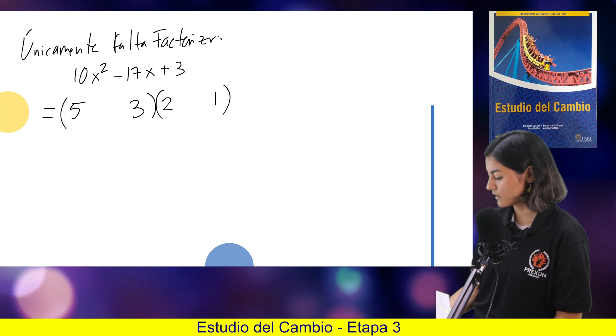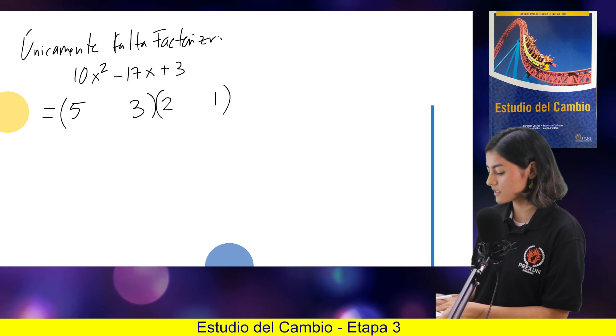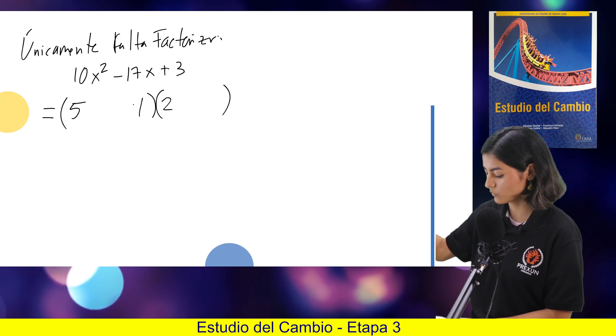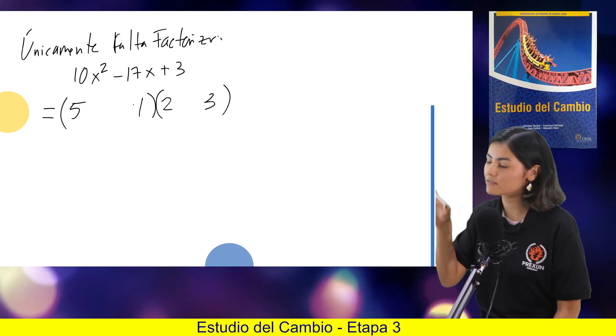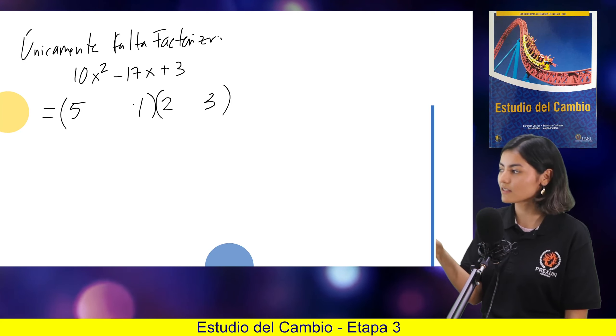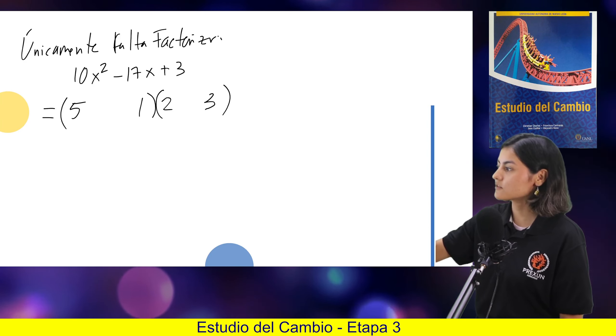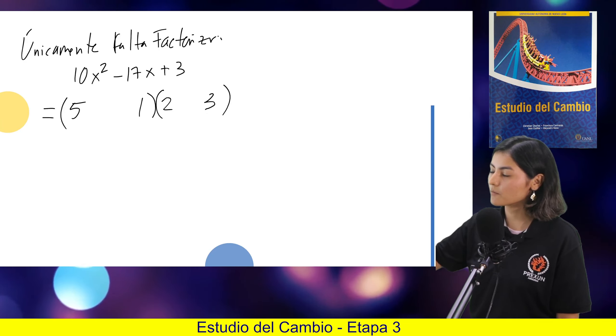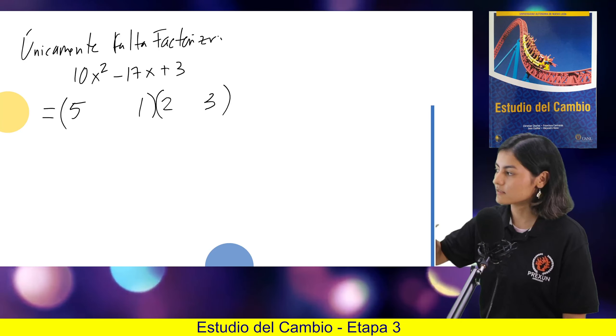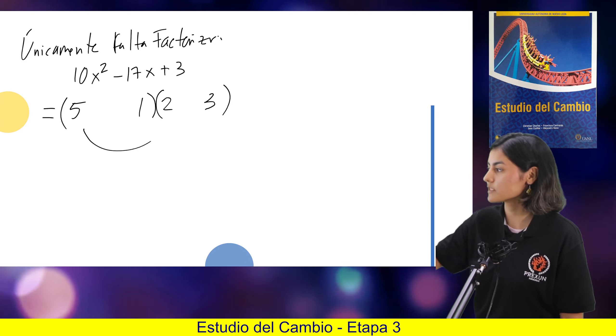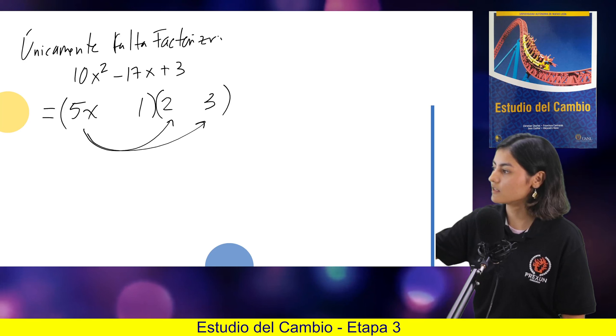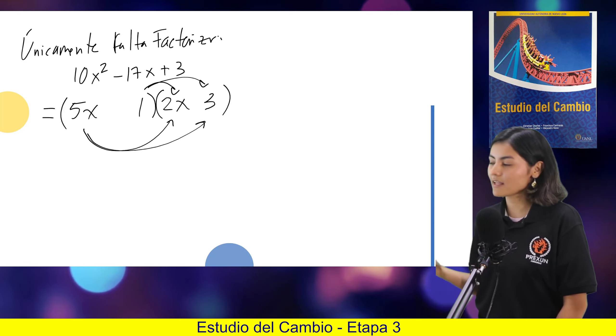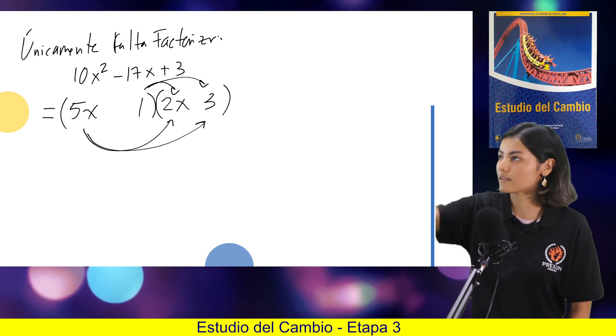Déjenme lo corroboro. Bueno, iría al revés. Lo único que va a pasar aquí diferente es que un 1 y un 3. Que al momento de hacer las multiplicaciones ya no es que nos sumen 17, de que te den multiplicados 3 y te sumen 17, sino que ya van a estar involucrados el 5 y el 2 a la hora de multiplicar.